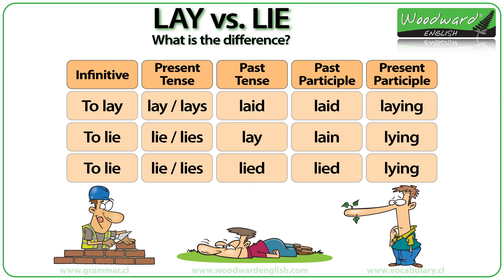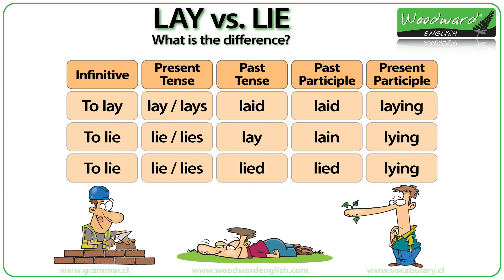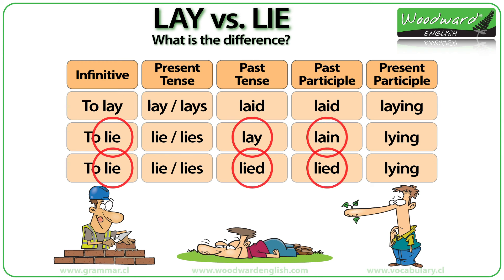Now let's look at the conjugation of these verbs together. You will notice that the word LAY is in the present tense of the verb TO LAY and also the past tense of TO LIE. As you have already seen, the meanings are completely different. Also, the verb TO LIE has two different forms of conjugation depending on its meaning. You can probably now see why even native English speakers can get confused by these verbs.